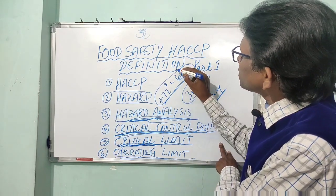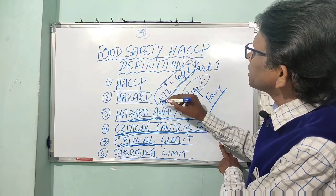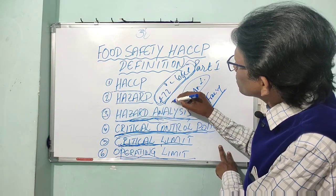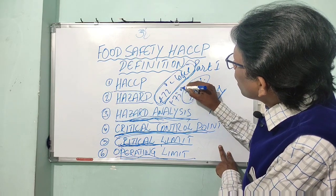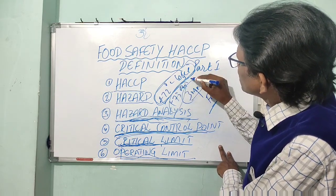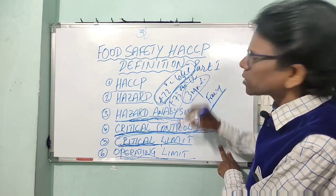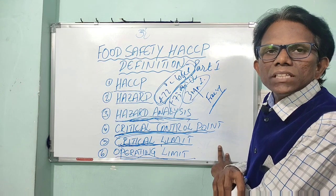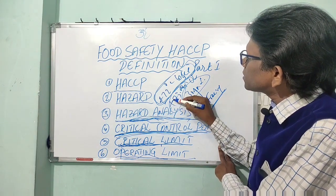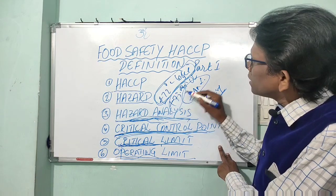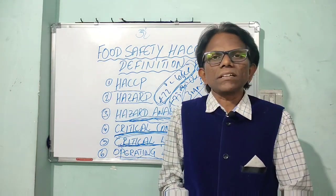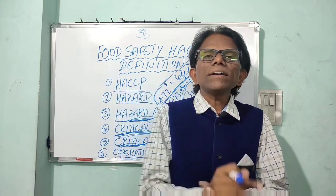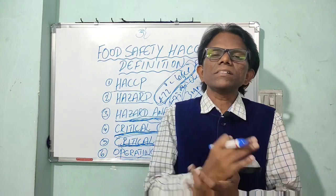For example, the critical limit for cook temperature is 72 degrees centigrade. The operator will establish an operating limit such as 73 or 74 degrees centigrade. If the product core temperature comes down to 73 or 74 degrees, the operator will take immediate steps — reducing belt speed, increasing steam, or other actions — to avoid deviations and prevent recurrence.